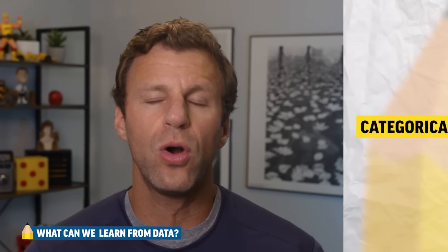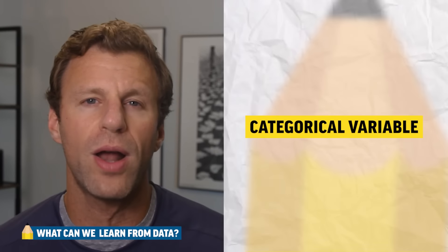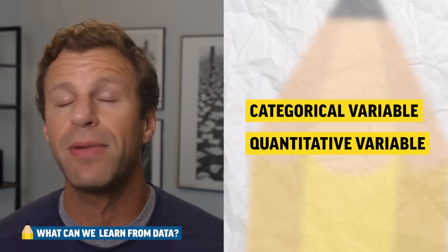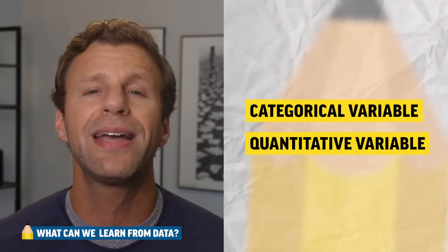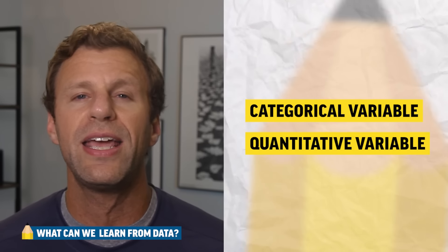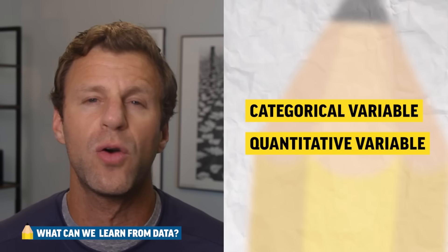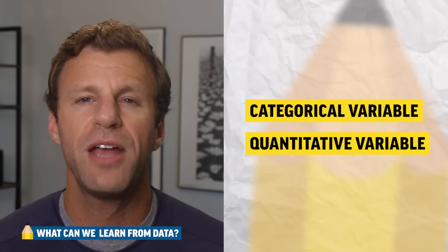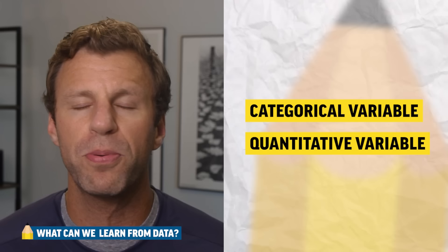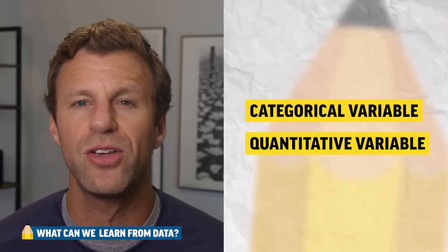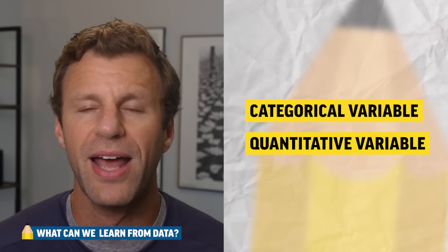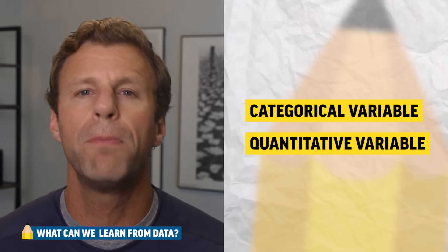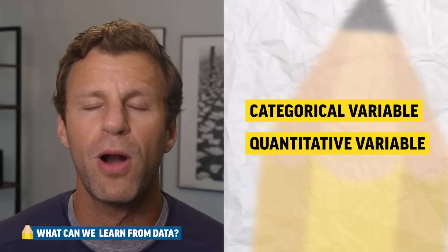This unit is really broken down into two things: categorical data and quantitative data. Categorical data is way easier, way faster, way shorter. In fact, only a small percentage of this entire unit is even about categorical data. Much, much bigger part of the unit is over quantitative data.